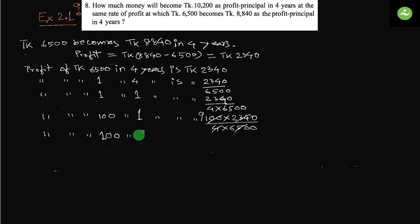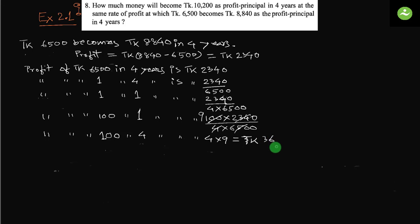So the profit rate is 9 taka per 100 taka per year. Profit of taka 100 in 4 years is 4 × 9 = 36 taka. So profit principal equals 100 plus 36, which means in 4 years principal taka 100 gives a profit principal of taka 136.